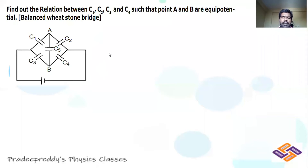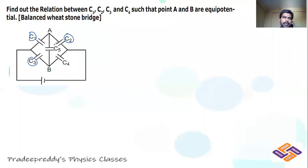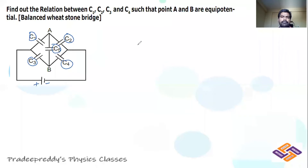In this session, I'll explain what is meant by Wheatstone bridge. We have five capacitors here: C1, C2, C3, C4, and this middle one C5. They have different capacitances — C1, C2, C3, C4, C5 all are different capacitances.